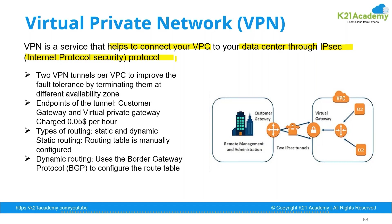Two VPN tunnels per VPC are required to improve fault tolerance, terminating them in different availability zones. From the customer or remote location, we create two VPN tunnels — one landing in one availability zone and another in a different availability zone — so that if one availability zone fails, you can still be connected to your network via the other. You are required to create a customer gateway and a virtual private gateway.